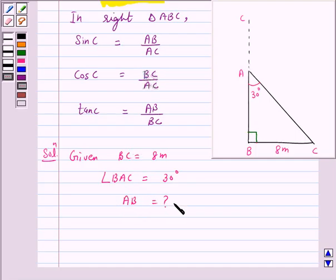To determine AB, we choose a trigonometric ratio which involves both AB and BC. We will choose the trigonometric ratio as tan 30 or cot 30, as this ratio involves AB and BC.